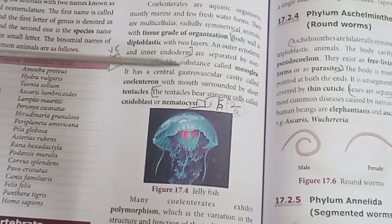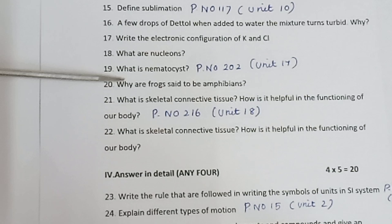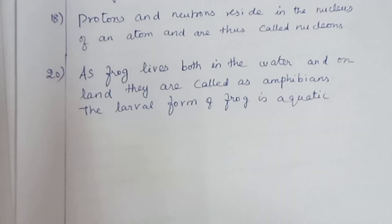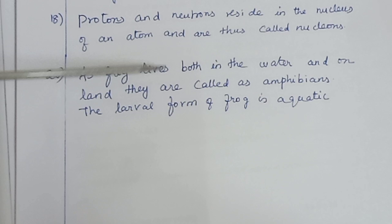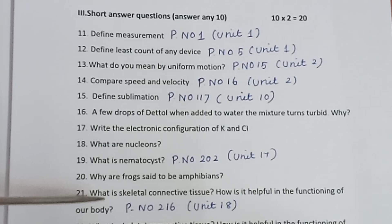The tentacles contain stinging nematocysts. Question 20: Why are frogs said to be amphibians? As frogs live both in the water and on land, they are called amphibians. The larval form of a frog is aquatic.